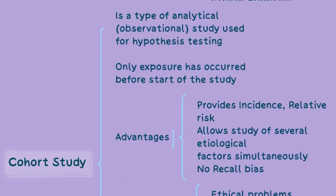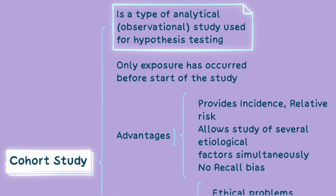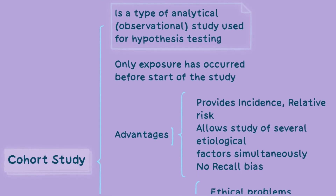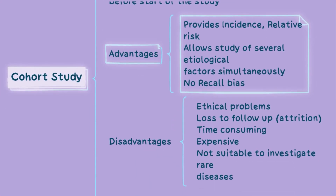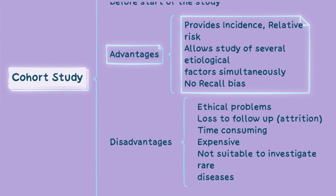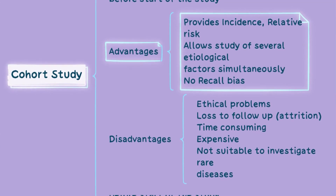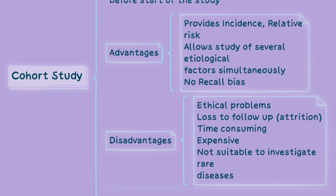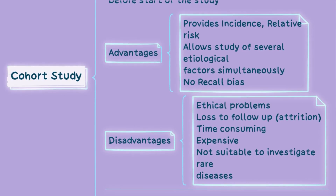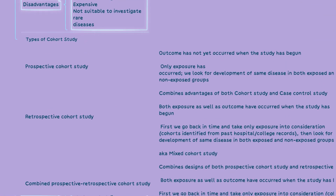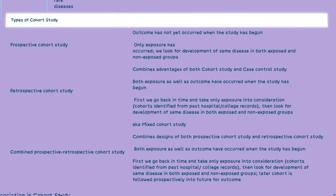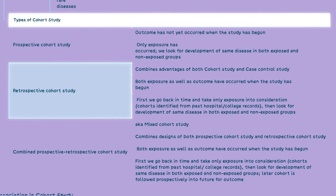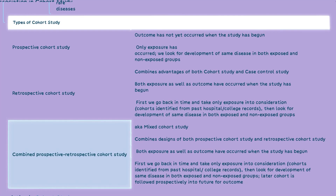Cohort studies, on the other hand, focus on individual participants and follow them over a specified period. Cohort studies can provide valuable information on incidence rates and relative risks. Some advantages and disadvantages of cohort studies are as seen here. There are different types of cohort studies: prospective, retrospective, and mixed retrospective-prospective.